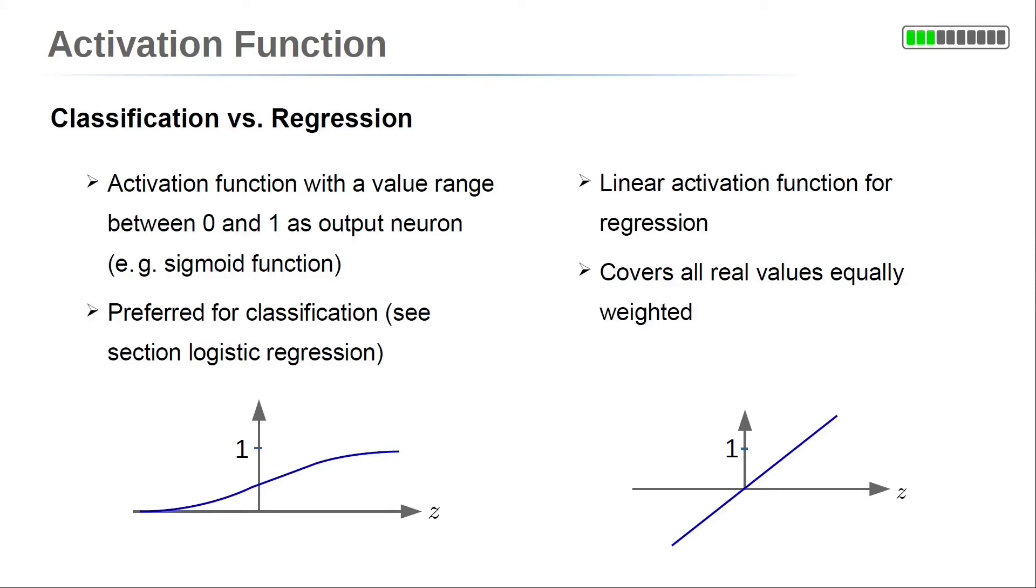In contrast to regression problems, for classification a different activation function in the output layer is used. Note that we could use a linear activation for classification as well. But the resulting model is very sensitive to outliers. This was shown in the lecture of logistic regression. So, typically an activation function with a limited value range is preferred. For example, the sigmoid function.